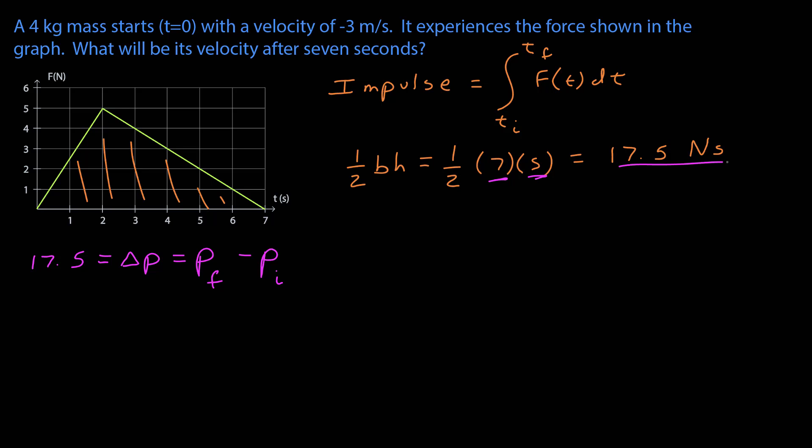I know that that impulse is equal to the change in momentum, the momentum final minus the momentum initial. The final momentum is 4 times the final velocity, and that's what we're trying to find. I just represent that with v here, minus the initial momentum, which is 4 times a negative 3. Simplifying, I have 4v plus 12, which is 4v is equal to 5.5, divide out, and I have the velocity is 1.375 meters per second. It's positive, so the velocity is now going in the positive x direction.